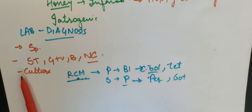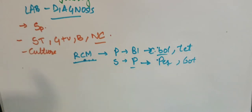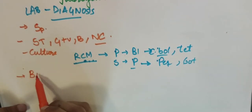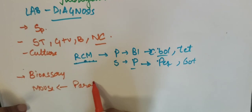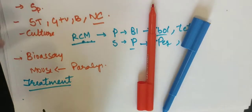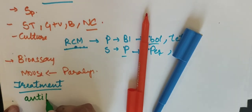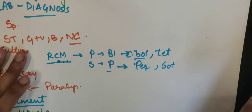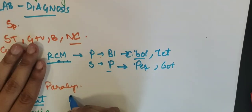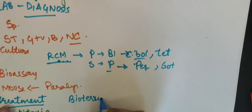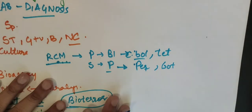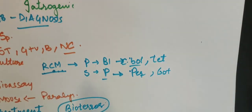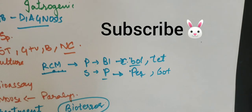Now this is botulinum because botulinum is a type of... and after that it can be bioassay. Bioassay means what we inject in an organism - what we inject in a mouse - and then what happens if there is paralysis in the mouse. What is the treatment? We give it antitoxin. And this is our botulinum used in bioterrorism. Bacillus anthracis is used in bioterrorism and this is also used in bioterrorism. So this was all about Clostridium botulinum. If you have any queries you can ask, and if you like the video please subscribe. Thank you!